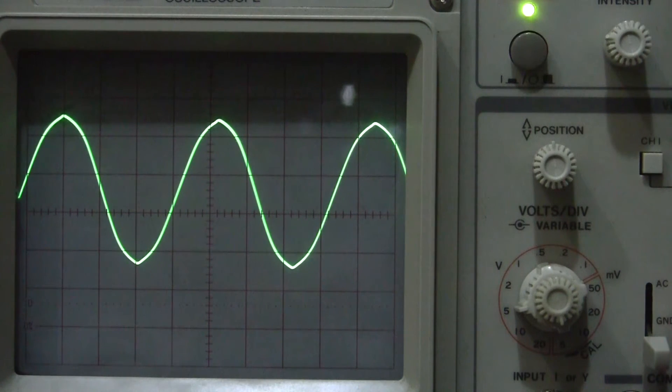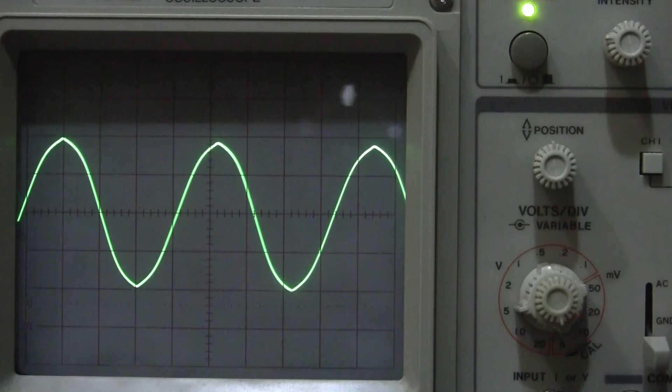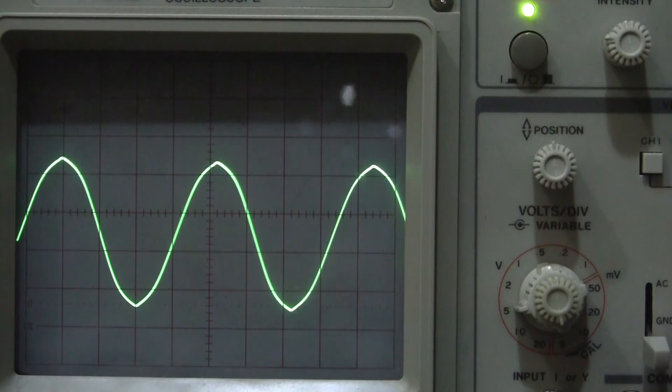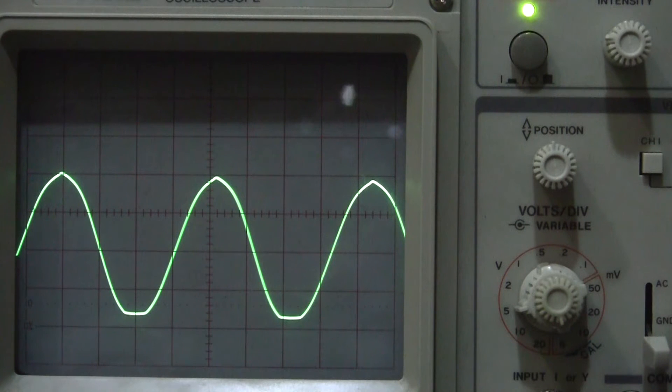We go back down and we adjust the offset for negative 5 volts. Now the clipping is more obvious here on the negative peak than on the positive peak as you can see it there.